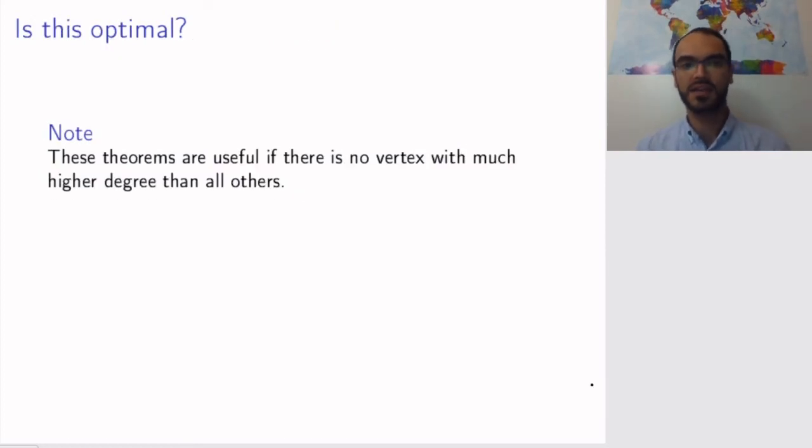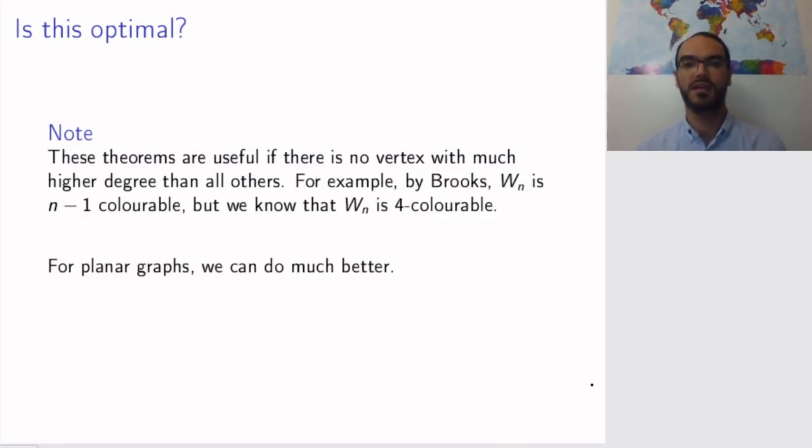Either way, you can ask, are these theorems optimal? And it turns out they're not. These theorems are useful if you don't have a vertex that has a much bigger degree than all other vertices. For example, Brooks' theorem tells us that the wheel graph with 17 vertices is 16-colorable. But we already know that it's 4-colorable, so we know that we actually don't need all the 16 colors. So these theorems are useful for some graphs, but not for all. But still, they are our first important results.